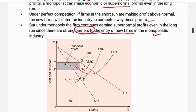Let us look at this diagrammatically. This is the average revenue curve, this is the marginal revenue curve. LAC is the long-run average cost, and LMC is the long-run marginal cost. If we look at point E, that is the equilibrium point where MR equals MC in the long-run.